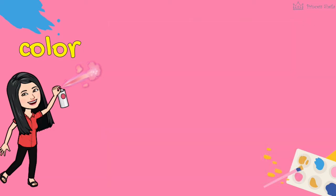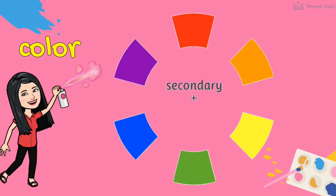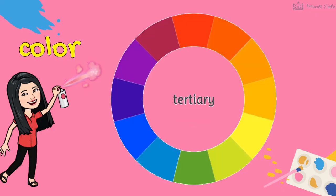There are three different types of colors: primary, secondary, and tertiary colors.